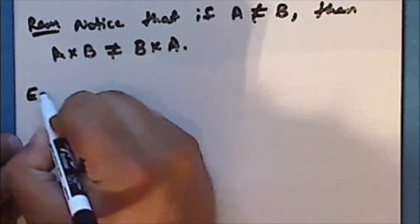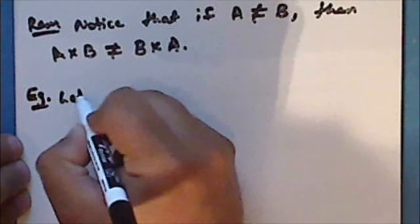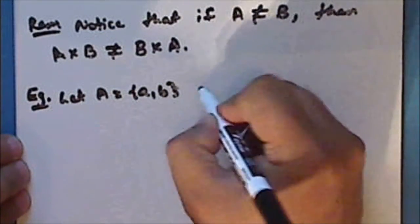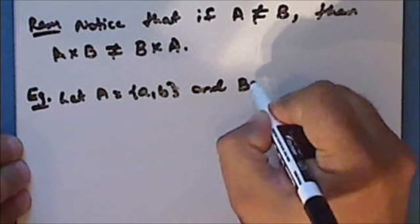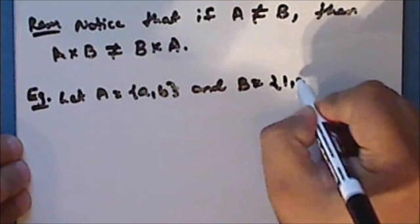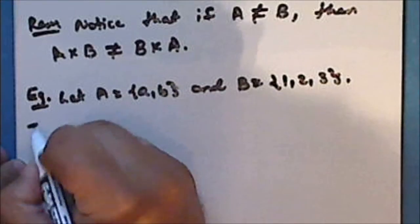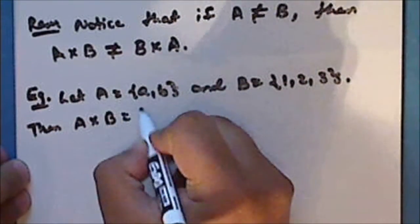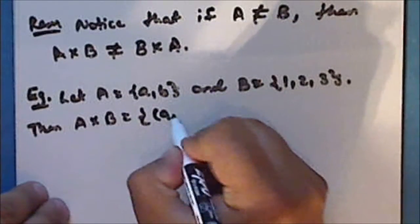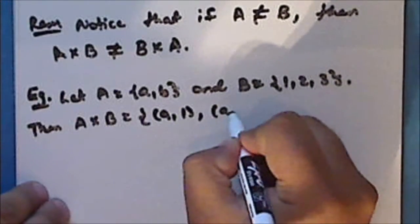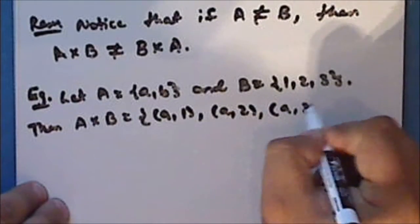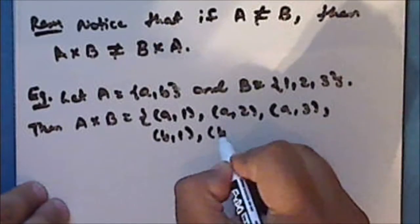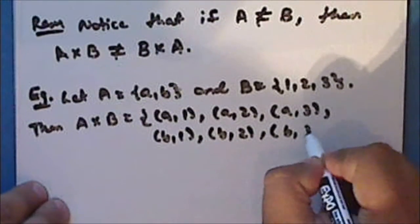Let's look at an example. Let A be the two-point set {a, b}, and let B contain the elements 1, 2, and 3. Then the Cartesian product A cross B is the set of ordered pairs: (a,1), (a,2), (a,3), (b,1), (b,2), and (b,3).